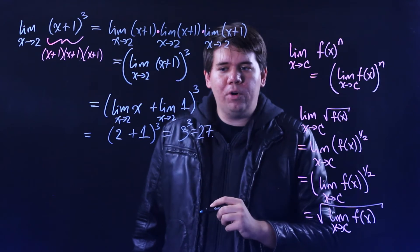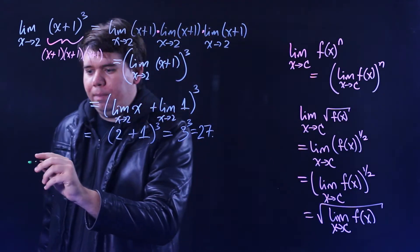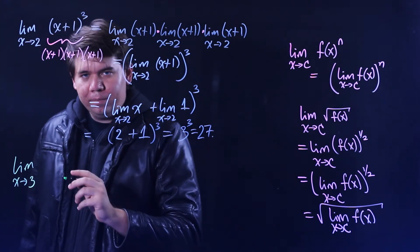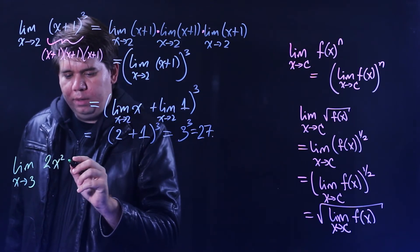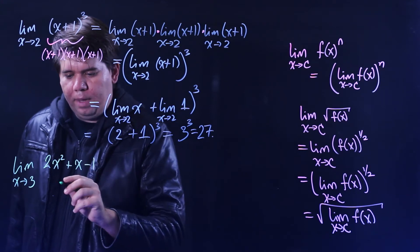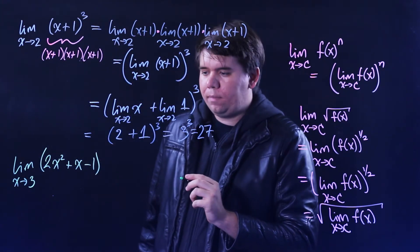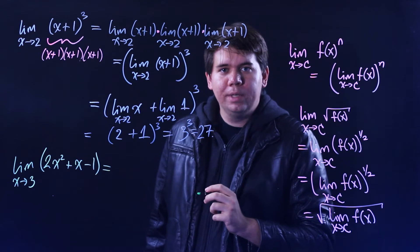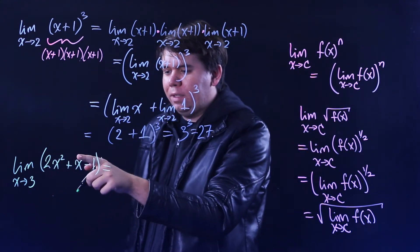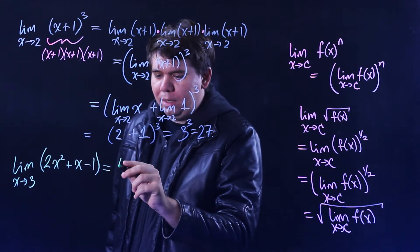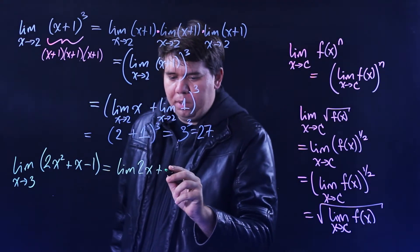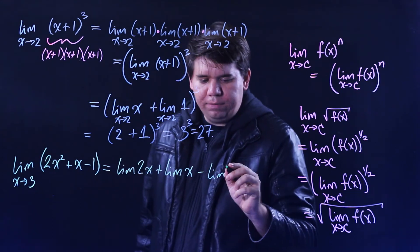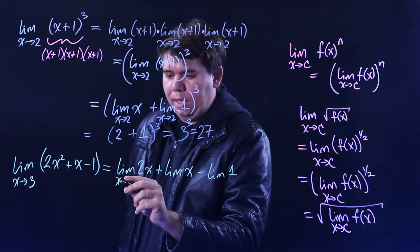Let's look at one more example. Consider the limit as x goes to 3 of 2x squared plus x minus 1. Notice you have addition and subtraction of some functions. We'll use our limit law to say the limit of a sum of functions is the sum of those limits: the limit of the first function, plus the limit of the second function, minus the limit of the constant function 1, as x approaches 3.